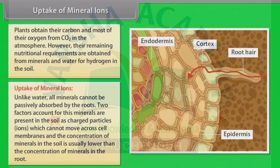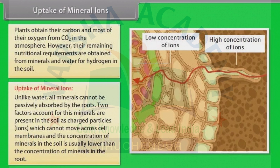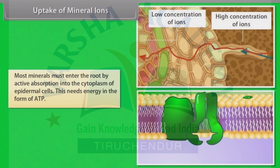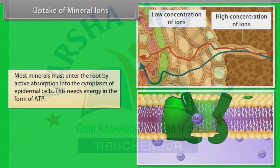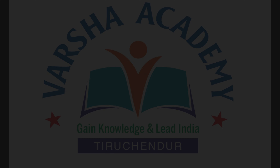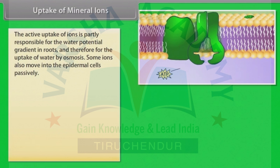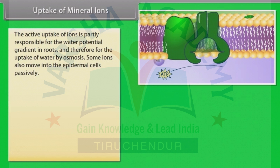Unlike water, all minerals cannot be passively absorbed by the roots. Two factors account for this: minerals are present in the soil as charged particles or ions, which cannot move across cell membranes, and the concentration of minerals in the soil is usually lower than the concentration of minerals in the root. Therefore, most minerals must enter the root by active absorption into the cytoplasm of epidermal cells. This needs energy in the form of ATP.